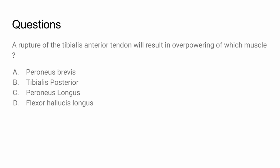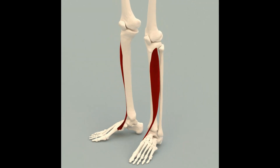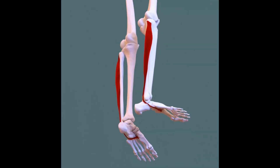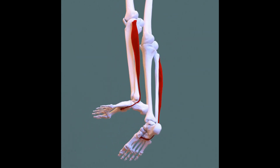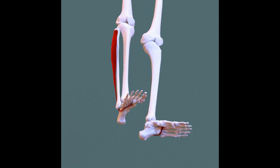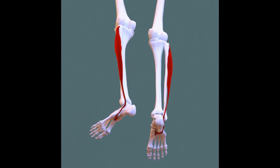Clinically, we can see a question like this: a rupture of the tibialis anterior tendon will result in overpowering of which muscle? When the tibialis anterior tendon is ruptured, the major functions of dorsiflexion and inversion are lost. When we think of those functions, we know the opposites — plantarflexion and eversion will be gained. The muscle that does most of that work is the peroneus longus. Think about its insertion on the first metatarsal base and the medial cuneiform, and how it adds to plantarflexion and eversion in the gait cycle.